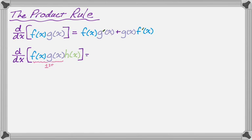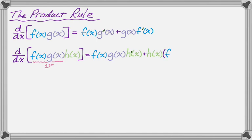We're going to have first, which is f times g, times derivative of the second, so h prime, and then plus second, which is h(x), times derivative of the first. But the first is f times g, so I need to use the product rule on that. So it's going to be first times derivative of the second, and then plus second times derivative of the first.